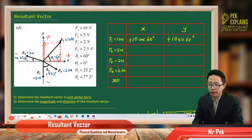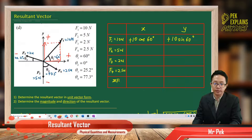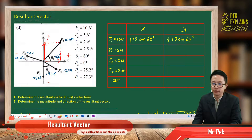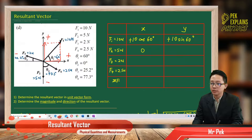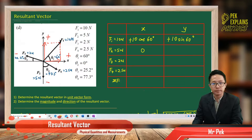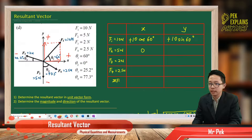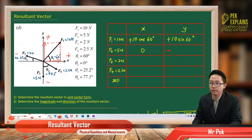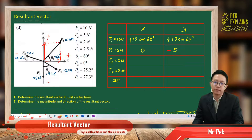For F2, it is going down. F2 only has a Y component — no X component, so X is 0. Since it is going down, going down is negative. So we need to add the negative sign: negative 5 Newton.